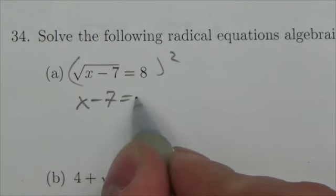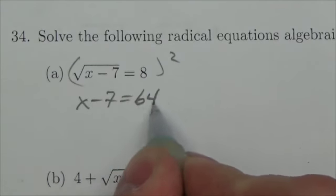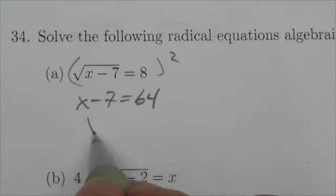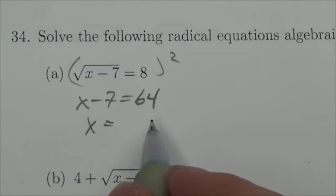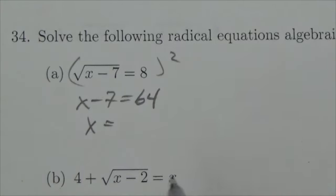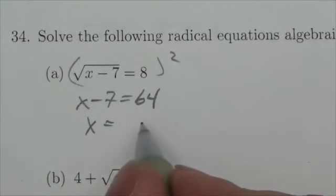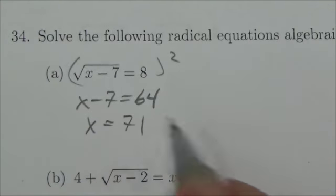So x minus 7 is equal to 64, and then I would add 7 to both sides. So I'll add 7 to 64 to get 71.